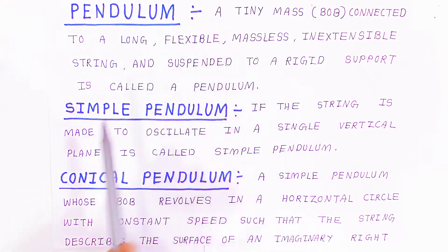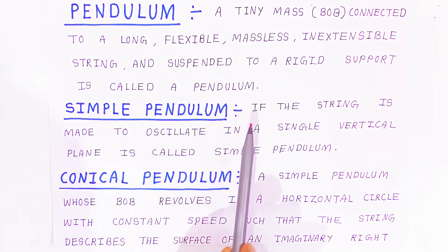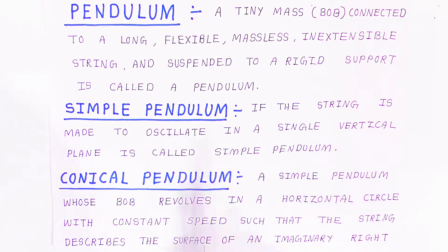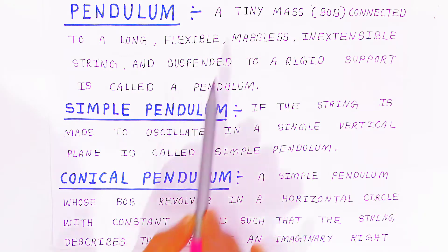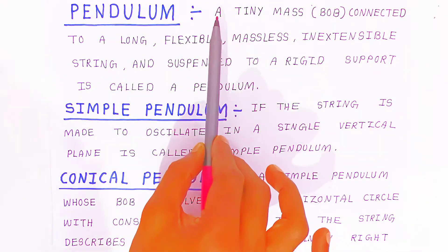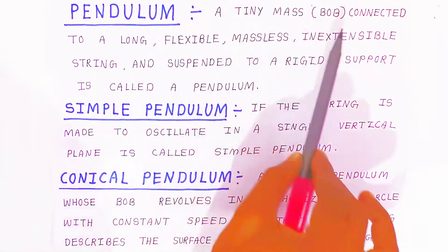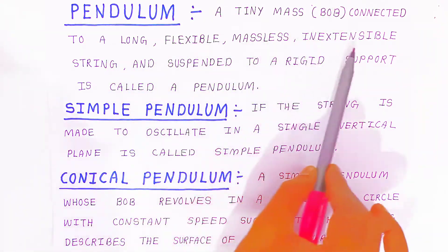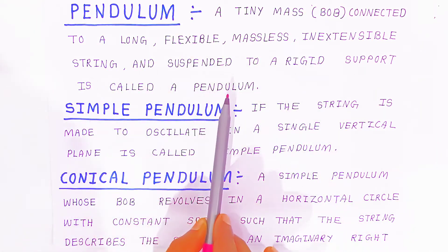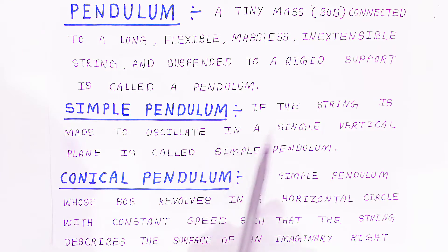Which pendulum is a simple pendulum? When the string is made to oscillate in a single vertical plane only, that arrangement is called a simple pendulum. So a pendulum whose string oscillates in a single vertical plane is a simple pendulum.